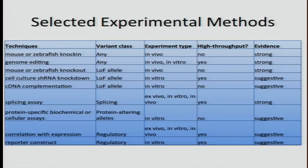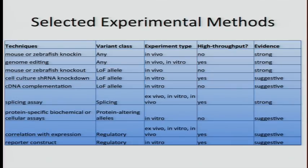For loss-of-function alleles, options include knock-down in an animal, in cell culture, or cDNA complementation. For splicing variants, there are splicing assays that can be done in vitro, ex vivo, or in vivo. Depending on the gene or protein, a number of biochemical or cellular assays may also be suited to particular applications. For regulatory variants, it's possible to correlate with gene expression—in a directed test with RNA from your patient or by looking at reference databases—and to test using reporter constructs. Rather than go through each method individually, we'll show real examples of how this has been applied to genetic research and some of the advantages and disadvantages.